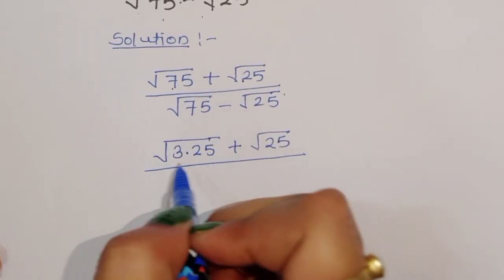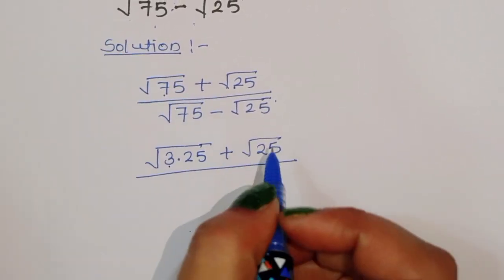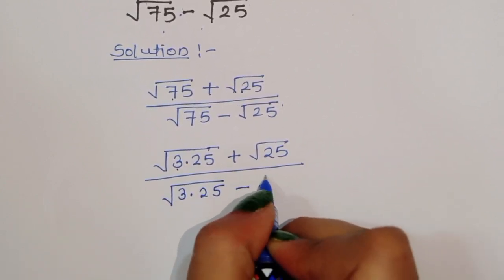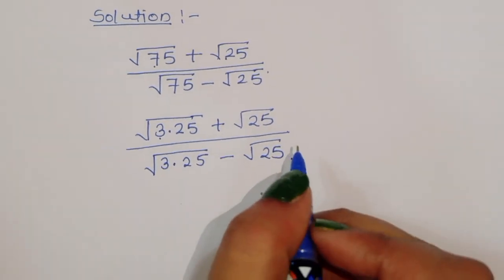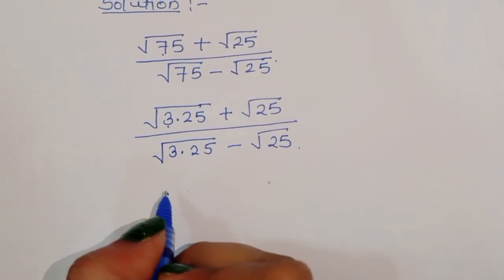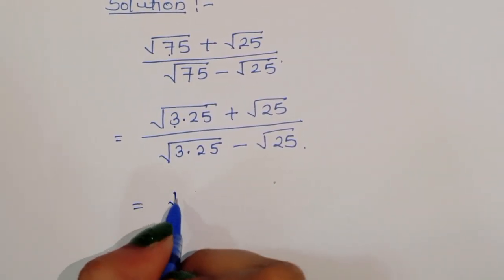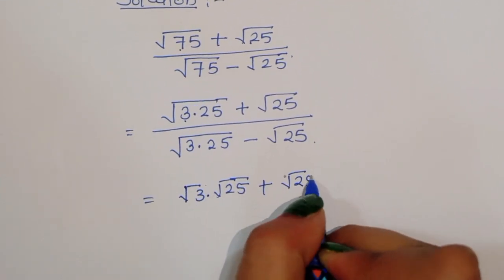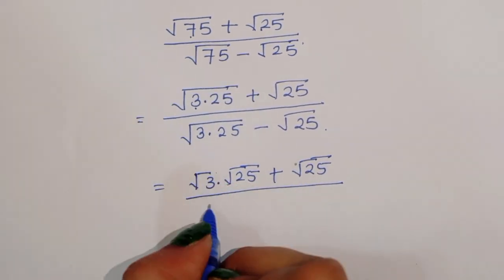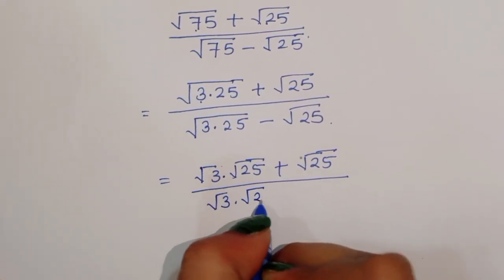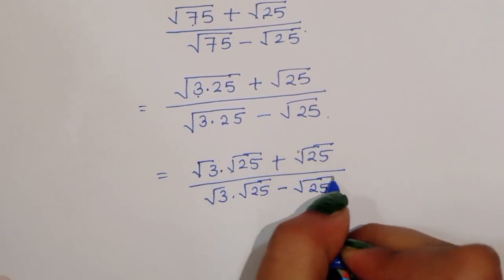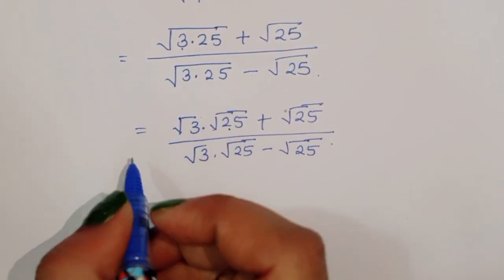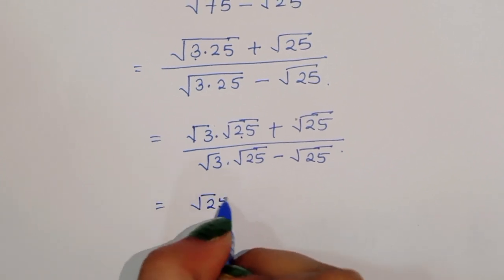We can solve this type of question. We rewrite it as: square root of 3 times square root of 25, plus square root of 25, divided by square root of 3 times square root of 25, minus square root of 25. You can see that square root of 25 is common, so we take it out as a common factor.